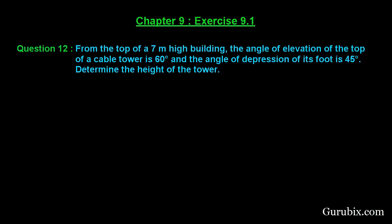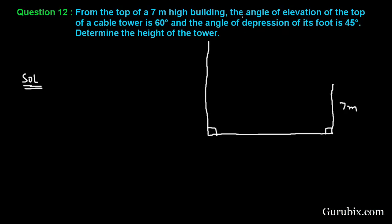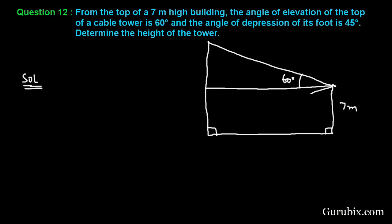This is a very interesting question. Let us solve it. First, draw the rough sketch of the figure using the information given in the question. Suppose this is the ground — we have a building which is 7 meters high and a cable tower. We are given that the angle of elevation of the top of the cable tower is 60 degrees from the top of the building. If we draw the horizontal level, this angle is 60 degrees, and the angle of depression of its foot is 45 degrees.